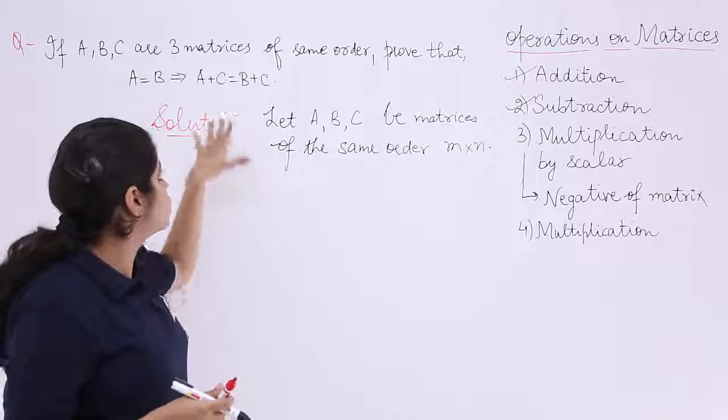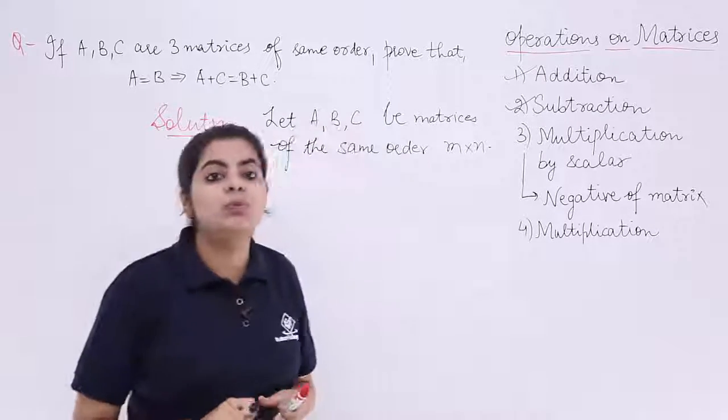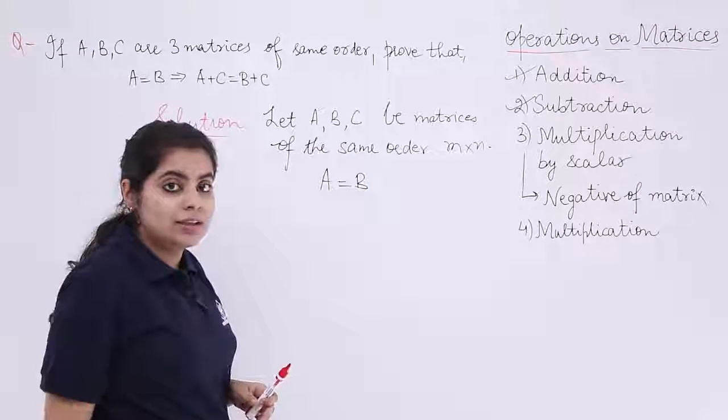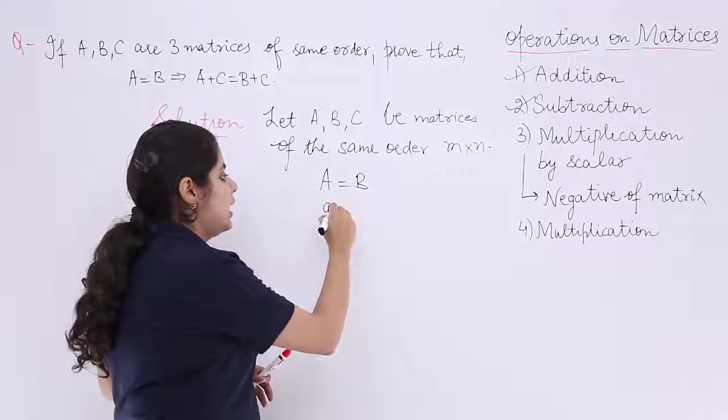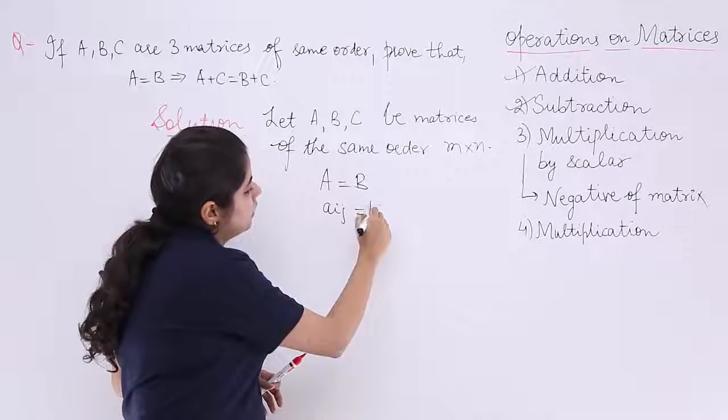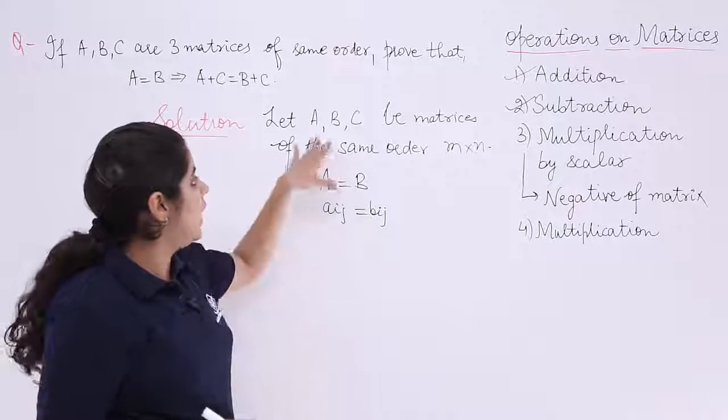Now some matrices are given to me, same order is given. Also one thing is given to me: A is equal to B. You see here it is A equals B implies something. So when A equals B, that means I have A_ij is equal to B_ij. This is the story.